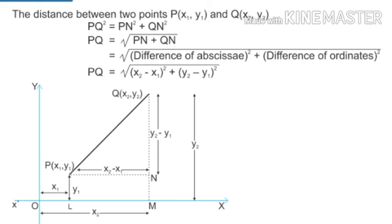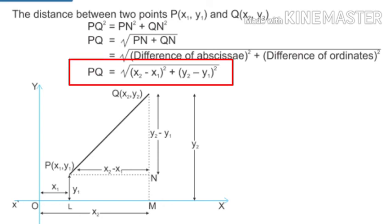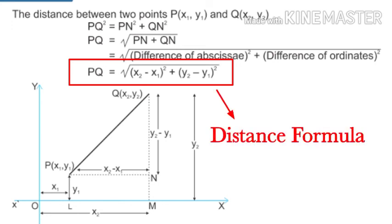One more thing to recall: the coordinate of the x-axis is called the abscissa, and the coordinate of the y-axis is called the ordinate. Now, PQ = √((x2 - x1)² + (y2 - y1)²). This is the formula to calculate the distance between any two points on the graph — this is what we call the distance formula.